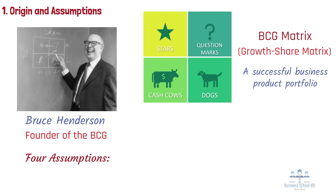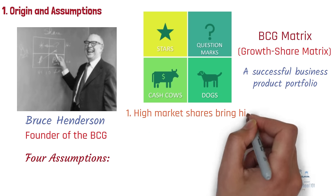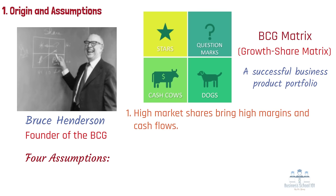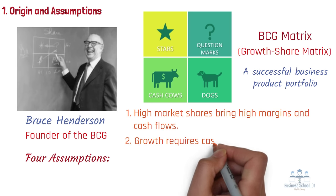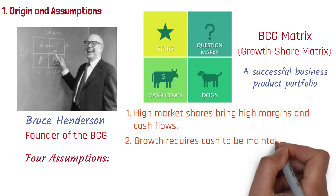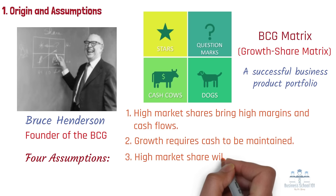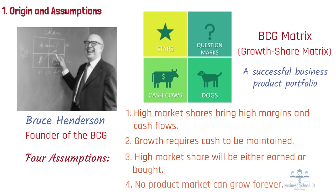Number 1: High market shares bring high margins and cash flows. Number 2: Growth requires cash to be maintained. Number 3: High market share will be either earned or bought. Number 4: No product market can grow forever.